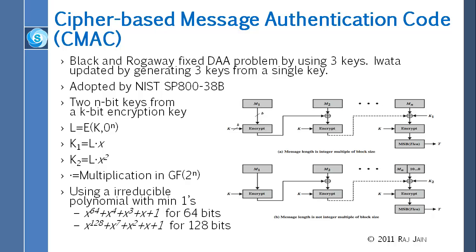CMAC is the NIST standard SP800-38B. In that standard, basically what you do is derive two N-bit keys from a k-bit encryption key. To get that, you first generate L, which is the encryption of k with N zeros. Basically, zero raised to N means you write zero N times. So you encrypt the key k and get some random number L. Then you multiply it with x in Galois field 2 raised to N using this polynomial.